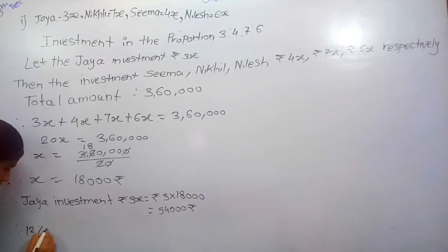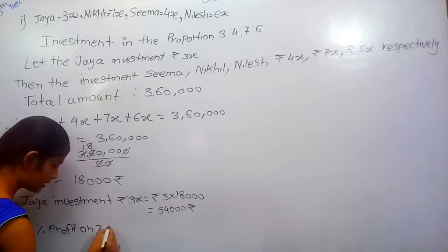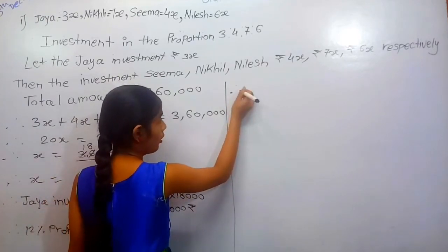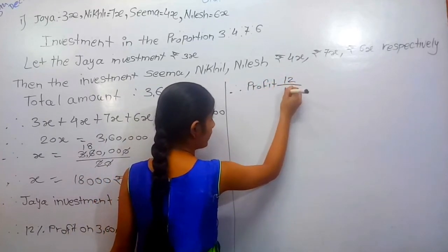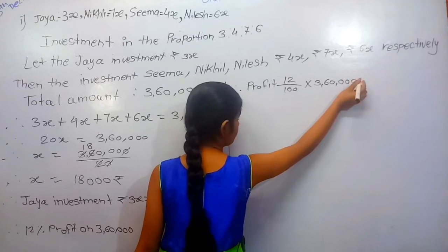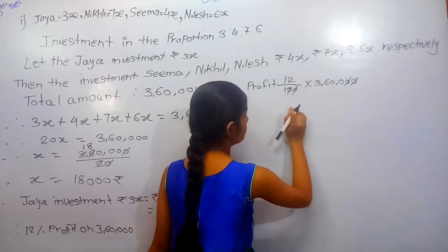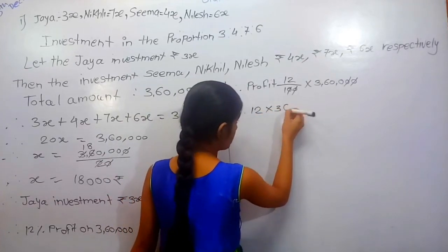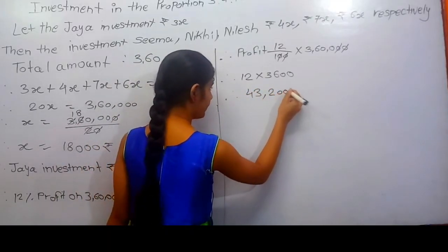Therefore, 12% profit on Rs. 3,16,000. Profit equals 12 upon 100, multiplication by 3,16,000. Cancelling zeros, 12 multiplied by 3,600 equals Rs. 43,200.